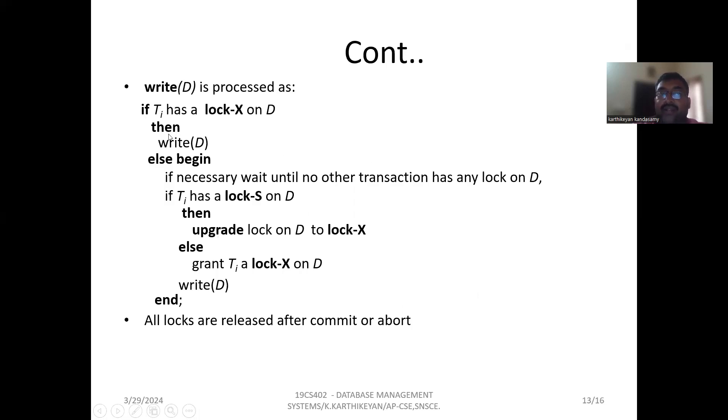Next, write(D) is processed as if Ti has lock-X on D. Then write(D), else begin: if necessary, wait until no other transaction has any lock on D. If Ti has lock-S on D, then upgrade lock on D to lock-X. Grant Ti lock-X on D, write(D), end. All locks are released after commit or abort.